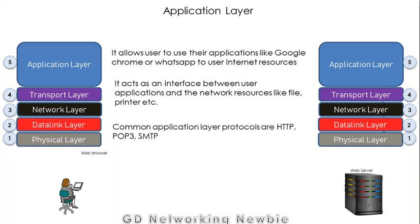First, we will discuss the application layer. The application layer allows users to use their applications — like Google Chrome or WhatsApp — to access internet resources. It acts as an interface between the user's applications and the network resources. Some common application layer protocols are HTTP, POP3, and SMTP.